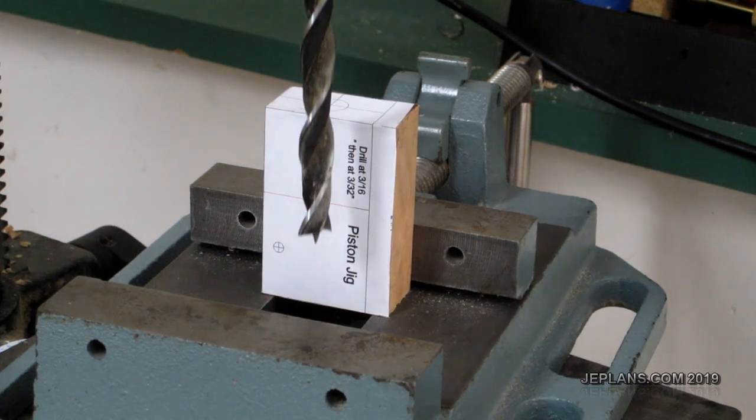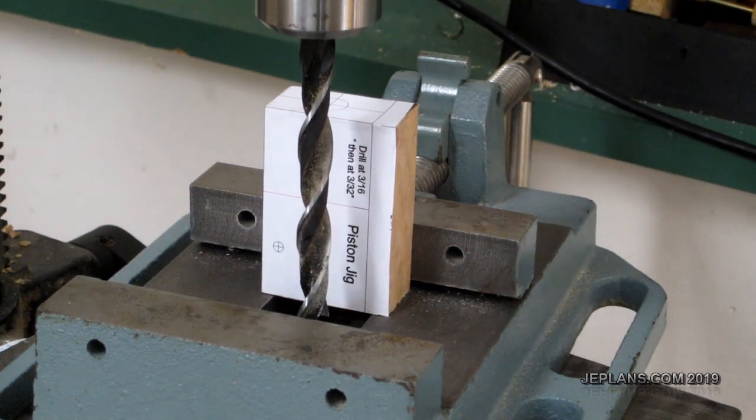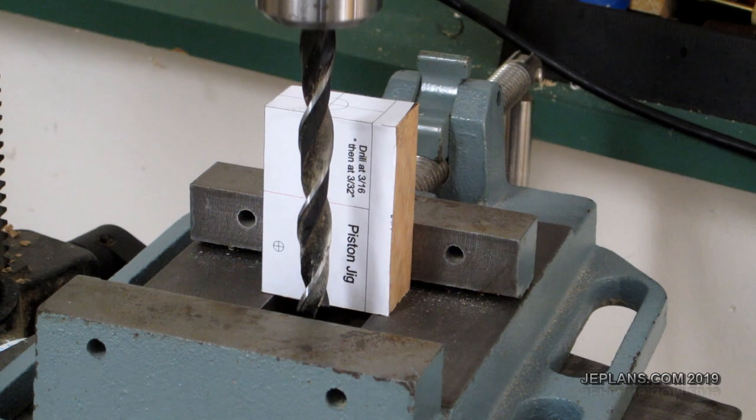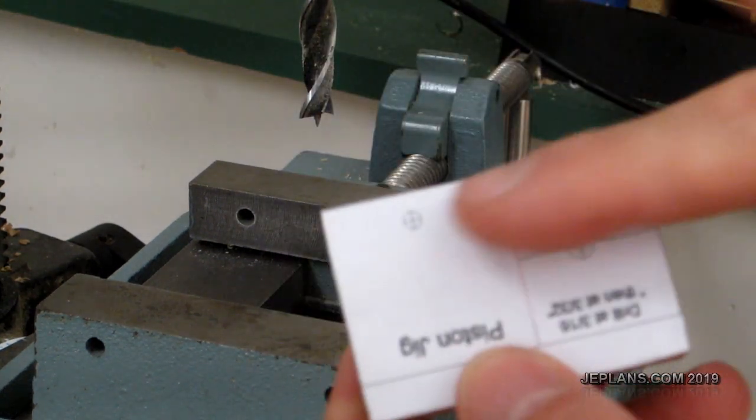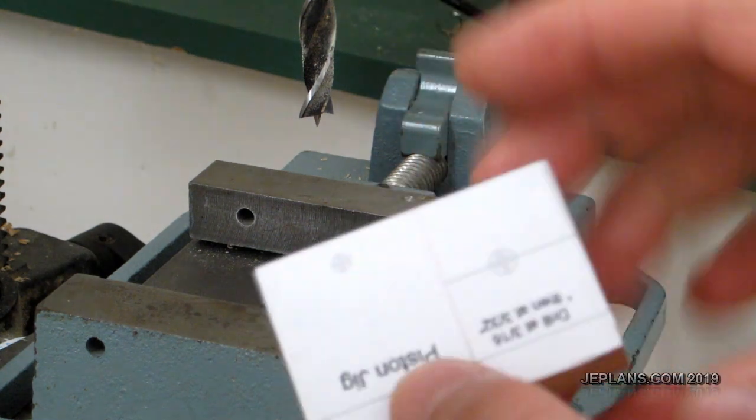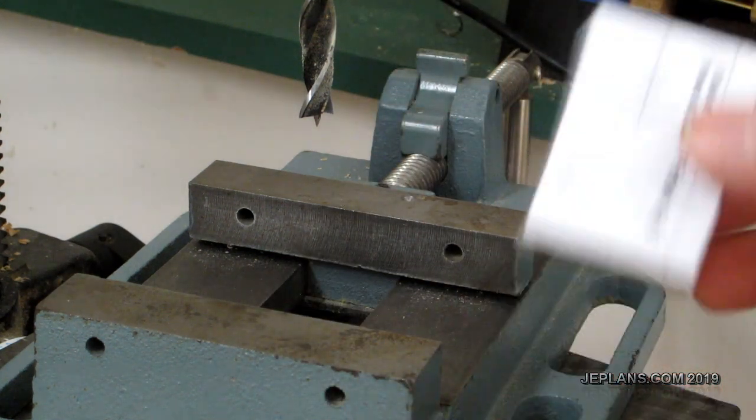Alright, so with my drill press and 3/8ths bit, it doesn't quite have enough travel to go all the way through. But that's fine, because I don't really need the hole length. So I'll drill as deep as I can, and then just cut it off to open it up. That'll be fine for my purposes.